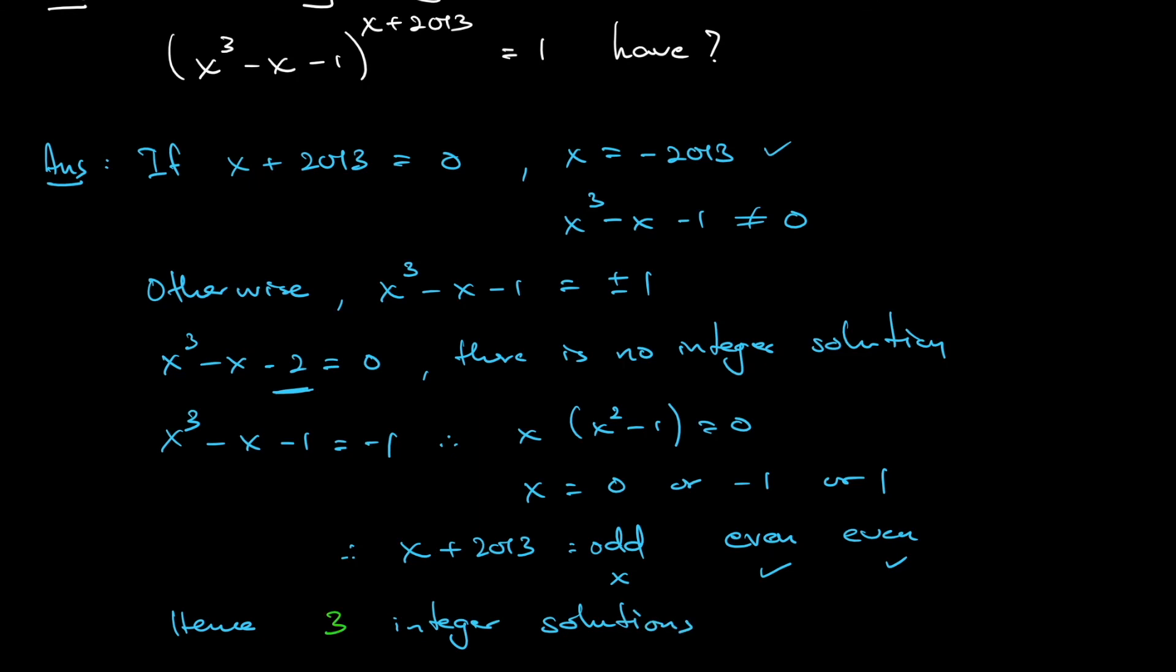So basically, x can be negative 2013, x can be negative 1, or x can be 1. So 3 integer solutions.